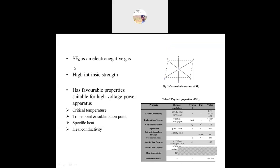There are two types of strength based on electrostatic properties. SF6 has favorable properties and is mainly used for high voltage power applications — not for domestic purpose. It is used in circuit breakers only for higher voltages. The properties to check are critical temperature, triple point, sublimation point, specific heat, and thermal conductivity.